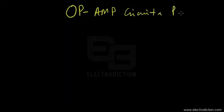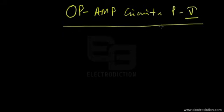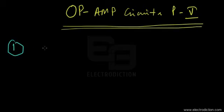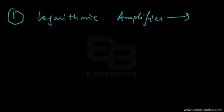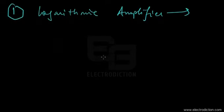Welcome to part 5 of our tutorial on op-amp circuits. Today I'm planning to discuss the circuits of the logarithmic and anti-logarithmic amplifiers. Let's start with the logarithmic amplifier. The output of the logarithmic amplifier is obtained as the logarithm of the input voltage signal applied to the circuit.